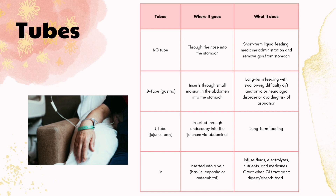Next we have the J tube which is inserted through the jejunum and this is also for long-term feeding. And lastly we have the IV which we most commonly know, and I have a picture of it towards the left. It is inserted through a vein and helps infuse liquids and administer medicines.